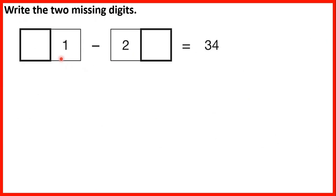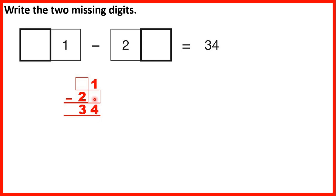Write the two missing digits: something minus something equals 34. We write this as a column subtraction. Starting with the ones digit: we have 1 minus something giving 4. Since 4 is larger than 1, they must have exchanged with the tens digit and subtracted from 11 to get 4. Now 11 minus 7 is 4, so this missing ones digit must be 7. Moving to the tens: something minus 2 is 3, and 5 minus 2 is 3.